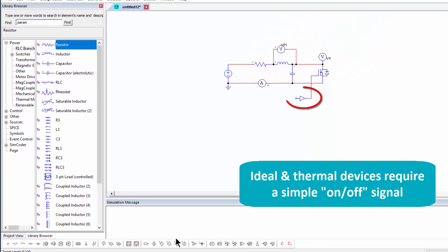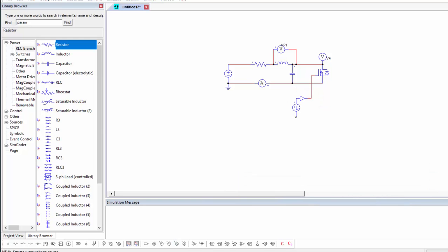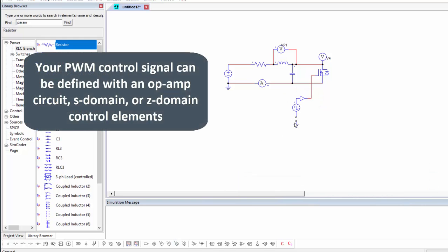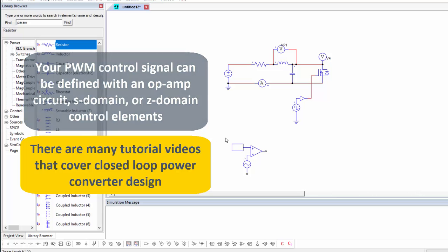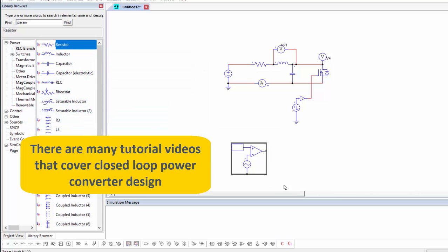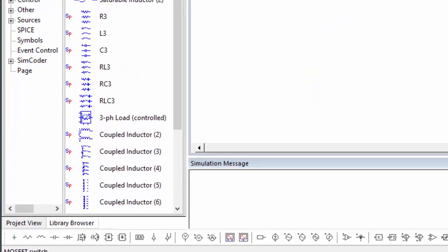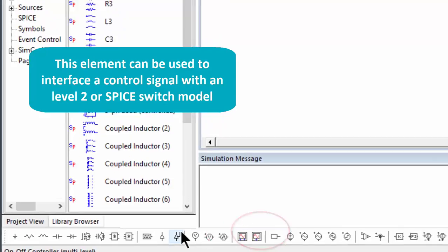And then we can then either connect a square-wave voltage source to this, or we could then build a comparator waveform, a PWM generation circuit with a comparator element and a triangle source for a carrier waveform and a reference point there. This is all we really need to do in order to get the switch to turn on and off. If you're using a Level 2 or a non-ideal switch, you can also use this on-off multi-level controller.